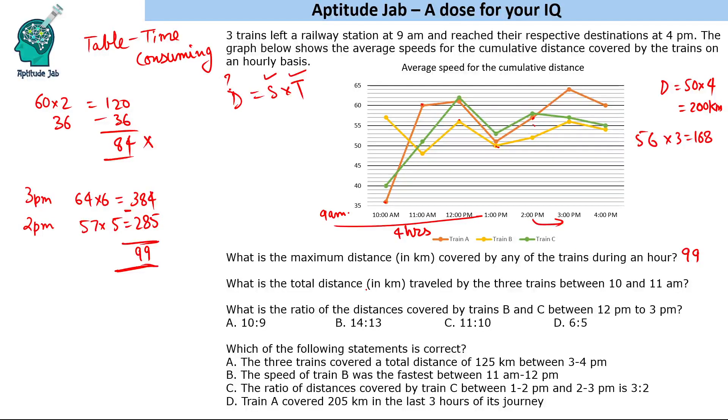Second question: what is the total distance in kilometers traveled by the three trains between 10 and 11 AM? Again you do not need the table. At 10 AM add these: that is 36, 40, 76 and 57 - 133. Add these values: 48, 51 is 99, plus 60 is 159. Time is 2 hours, so that will be 318 kilometers. 318 minus 133, you get the answer as 185 kilometers.